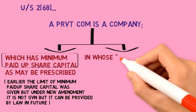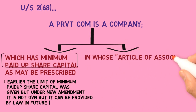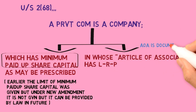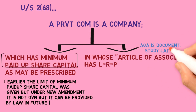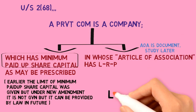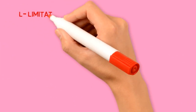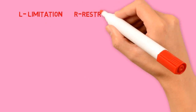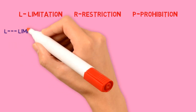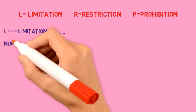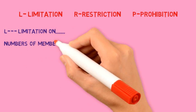Second condition: in whose Article of Association there is LRP. The Article of Association is a document which we will study later. LRP means: L for Limitation, R for Restriction, and P for Prohibition.